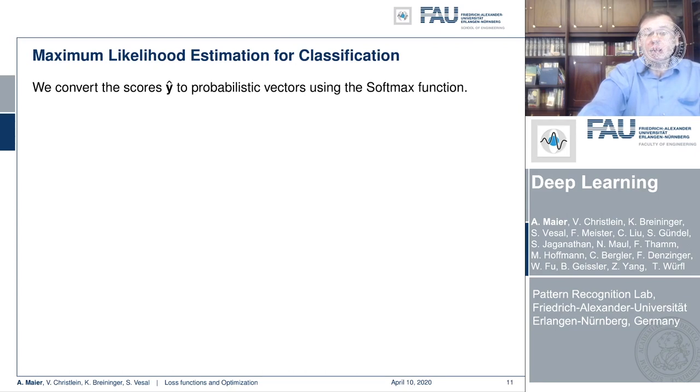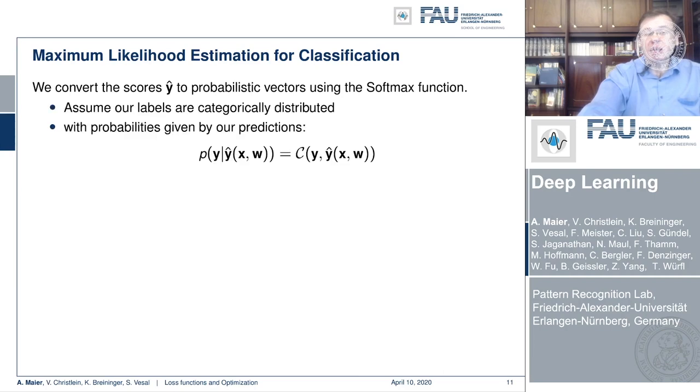Now we can look at how this would behave with our categorical distribution system. Here we simply replace our conditional with the categorical distribution, and this then gives us the following negative log likelihood function.